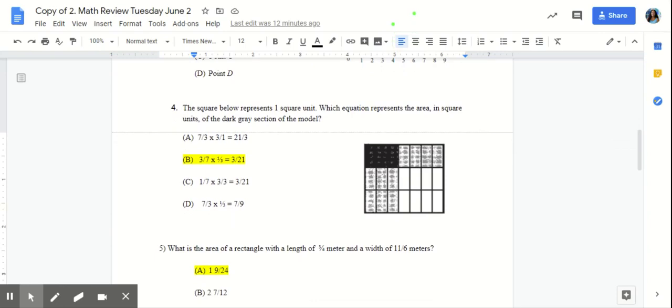Number four, the square below represents one square unit. Which equation represents the area in square units of the dark gray section of the model. So this is our dark gray section of our model.